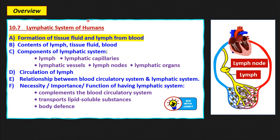Here's an overview of what we are going to study, similar to the learning standards. For 10.7, the lymphatic system of humans: first, we are going to talk about the formation of tissue fluid and lymph from blood. Next, we'll study the contents of lymph, tissue fluid and blood, then the components of the lymphatic system, then the circulation of lymph, the relationship between blood circulatory system and lymphatic system, and finally the importance or necessity of having the lymphatic system. Let's begin with formation of tissue fluid and lymph from blood.